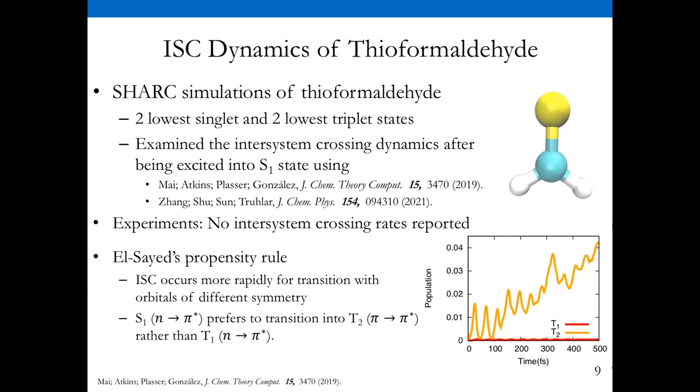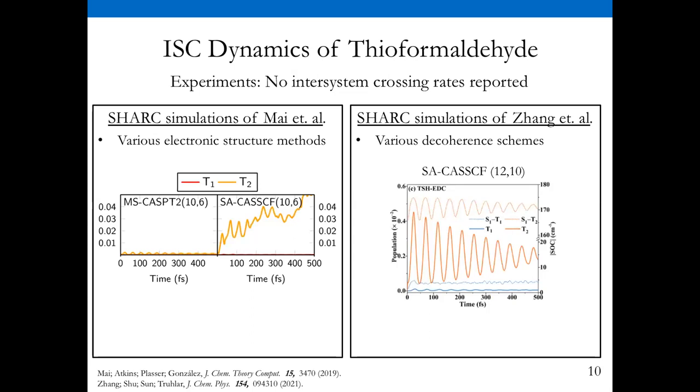I also want to mention El-Sayed's propensity rule, which says that intersystem crossing rates occur more rapidly for transitions with orbitals of different symmetry. S1 is the n to pi star transition. When we start looking at intersystem crossing phenomenon, it's going to prefer to transition to the T2 state, which is pi to pi star, rather than T1, which is n to pi star. The figure on the bottom right shows what we'd expect: as a function of time, the population of the T2 state would increase.